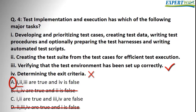We don't need to read options one or two right now — you can continue answering the exam. If you have more time after finishing the whole exam, you can come back and confirm your answer by reading the remaining options. For reference: option one — developing and prioritizing test cases, creating test data, writing test procedures, and optionally preparing the test harness and writing automated test scripts — is correct and is part of the implementation and execution testing activity.